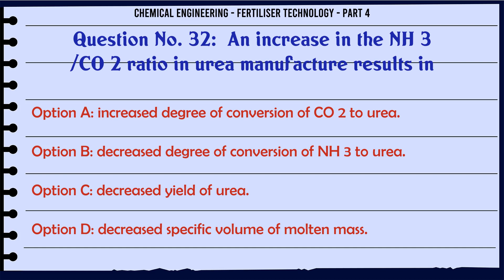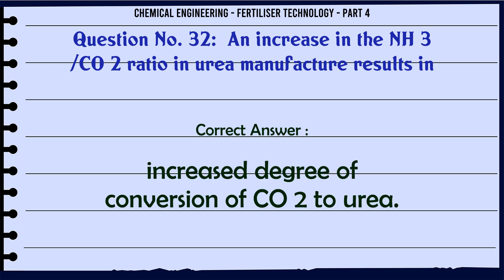An increase in the NH3:CO2 ratio in urea manufacture results in: a. increased degree of conversion of CO2 to urea, b. decreased degree of conversion of NH3 to urea, c. decreased yield of urea, d. decreased specific volume of molten mass. The correct answer is: increased degree of conversion of CO2 to urea.